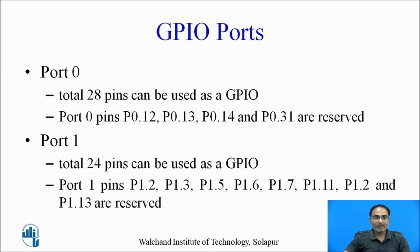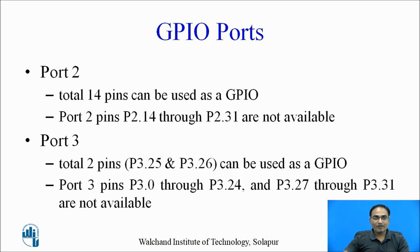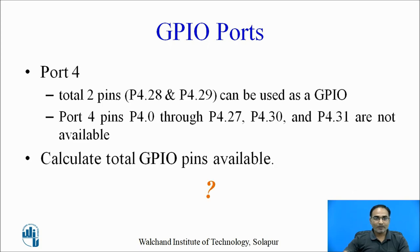Port 0: total 28 pins can be used as GPIO, but P0.12, 13, 14, and 31 are reserved and not available for the user. For port 1, 24 pins are available and P1.2, 3, 5, 6, 7, 11, 12, and 13 are reserved. For port 2, total 14 pins are available; P2.14 through P2.31 are not available. For port 3, only 2 pins are available: P3.25 and P3.26. Similarly, for port 4, again 2 pins are available: P4.28 and P4.29, and the remaining pins are reserved.